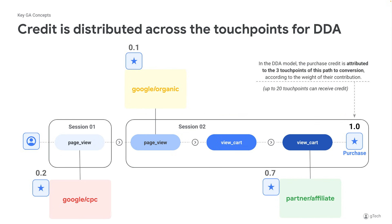Also note that when we're looking at data-driven attribution modeling, or DDA, credit is distributed across the various touch points. So in this case, we will see some credit given to the first user — the Google CPC UTMs — some credit given to the session start, Google organic, and some credit given to the partner affiliate UTMs. In the DDA model, the purchase credit is attributed to all three touch points according to their weight of contribution, which will be different for every path and is determined by the DDA modeling.